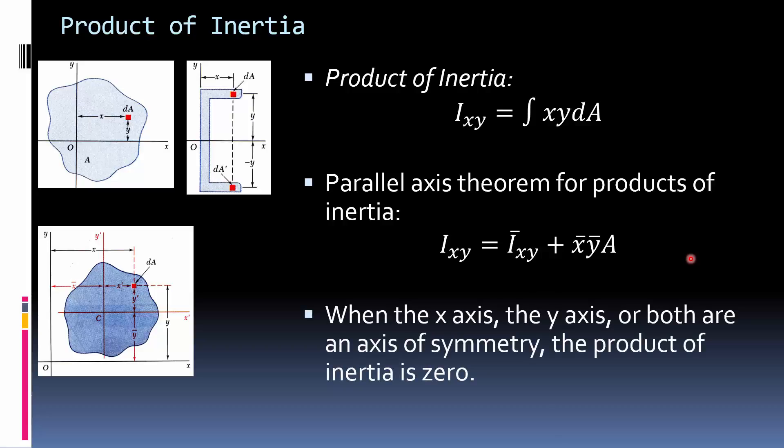And lastly, when the x-axis, the y-axis, or both, where either one or both of them are an axis of symmetry, not the centroid, but of symmetry, the product of inertia is zero.